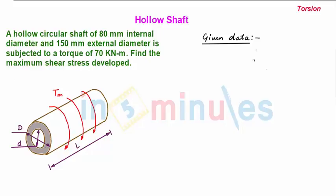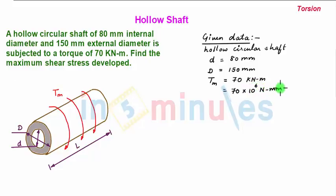Given data: hollow circular shaft with inner diameter d = 80 mm and outer diameter D = 150 mm, subjected to maximum torque Tm = 70 kNm = 70 × 10^6 N·mm. To find: maximum shear stress τm.